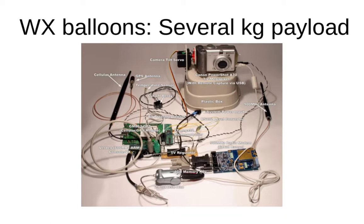Here is a picture showing an example payload for one of these high altitude balloons using the latex type. It contains a camera for taking photographs and videos, a 900 MHz radio modem with 64 km range, a cellular modem with a cellular antenna, a GPS antenna, a temperature sensor, and power supplies. With one of these flights you don't have to worry too much about weight, and the power source can be a battery that will last a few hours.